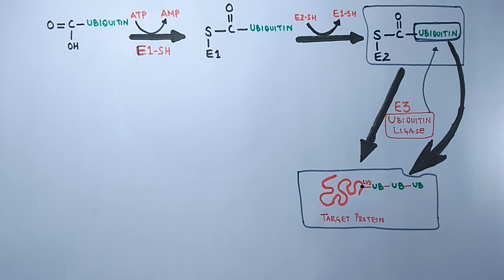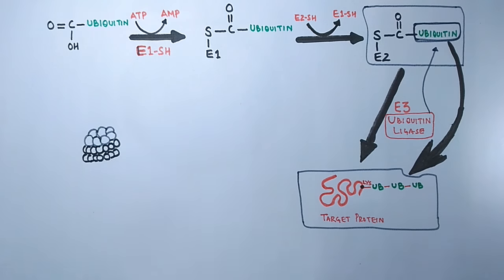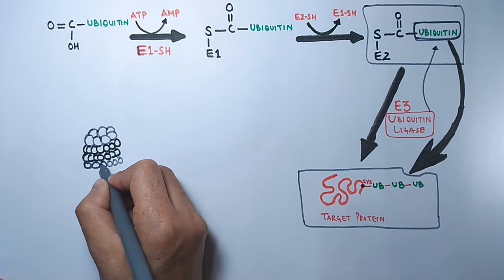So now we have ubiquitinated protein ready to be degraded. For this degradation process we need proteosomes. If we see the structure of proteosome, we have two alpha rings and also two beta rings which are sandwiched between alpha rings as shown in the diagram.